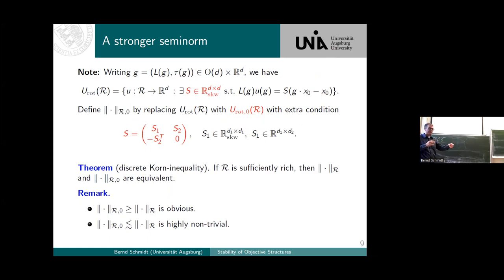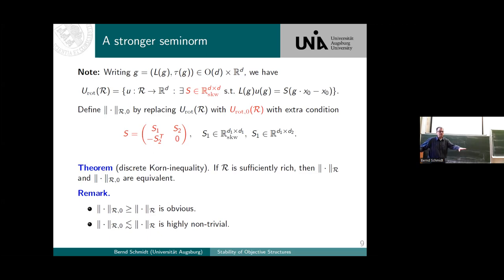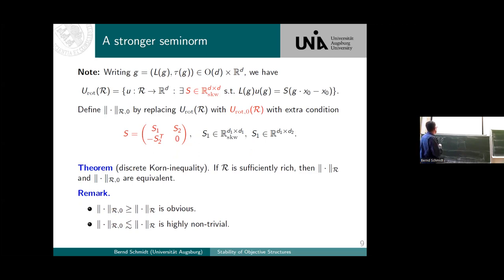In lower-dimensional structures, it's not a full Korn inequality, but it is a Korn inequality in the extended direction. For example, if you have a triangular lattice embedded into three-dimensional space, then in the direction orthogonal to the plane, the skew-symmetric matrix should be zero. One direction is easy since the subspace is smaller, but to prove this in full generality requires going through an analysis of the different types of perturbations that can be present in the system.